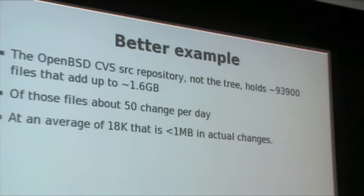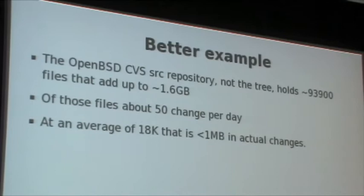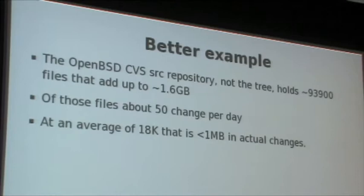Let's look at a better example. I looked at the CVS tree on OpenBSD, which had exactly 93,900 files — about 1.6 gigabytes worth of text data, basically every single source file in the user source repository for OpenBSD. I looked at the commit stats: roughly 50 files a day change. The average file is about 18K. So if you add it all up, it's slightly less than a megabyte of actual changes made every day.